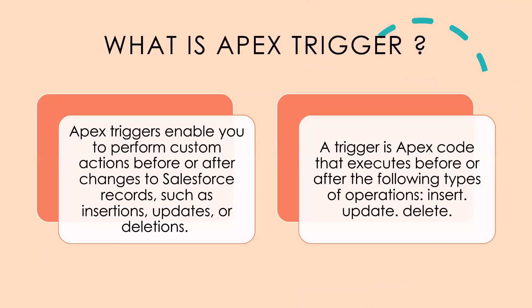So let's get started. The first question is what are Apex triggers? You would be knowing about DML operations that we have in Salesforce. When you actually go to a record, what are the kind of DML operations that you can do? Either you can insert a record, update a record, or delete a record. Now let's say that you want to perform some kind of custom actions based on a particular condition or criteria.